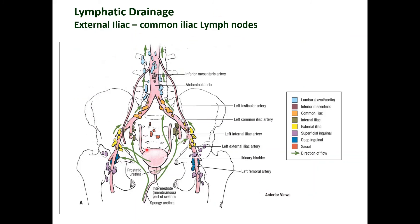The lymphatic drainage of the urinary bladder is widespread. Lymph drains mainly towards the external iliac lymph nodes, then to the common iliac lymph nodes, and then to para-aortic nodes. Some drainage also occurs towards the internal iliac lymph nodes and the obturator nodes within the pelvis.